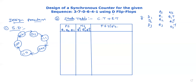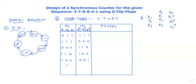Starting with present state 3 (0-1-1), the next state is 7 (1-1-1). Present state 7 (1-1-1), next state is 0 (0-0-0). Present state 0 (0-0-0), next state is 6 (1-1-0). Present state 6, next state is 4 (1-0-0). Present state 4 (1-0-0), next state is 1 (0-0-1). Present state 1, next state is 3, repeating the sequence. The output variable names for D flip-flop inputs are D1, D2, and D3.